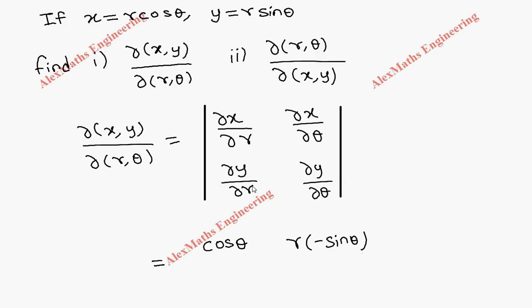Then ∂y/∂r: the partial derivative of y with respect to r is 1 times sin θ, since r differentiation is 1 and sin θ is constant. And ∂y/∂θ: here r is constant and derivative of sin θ is cos θ.